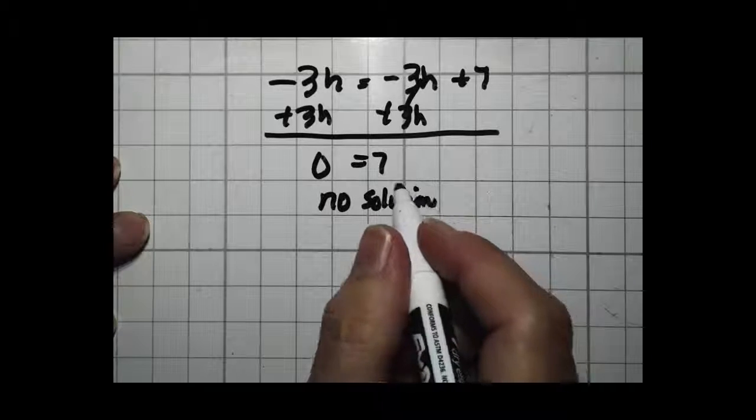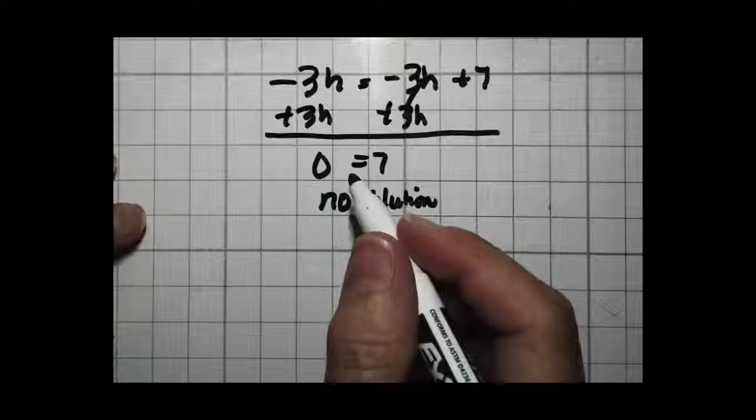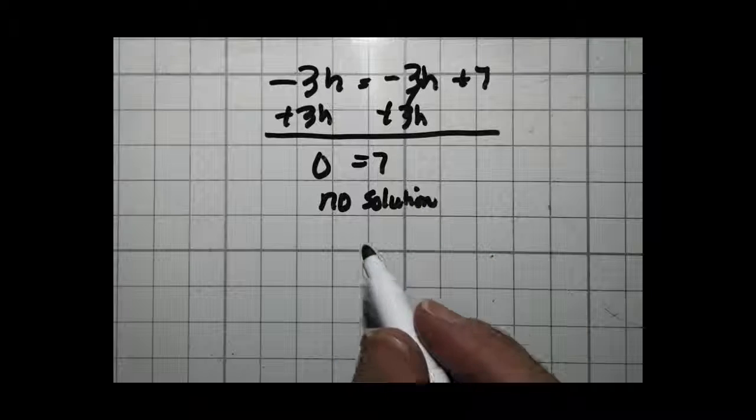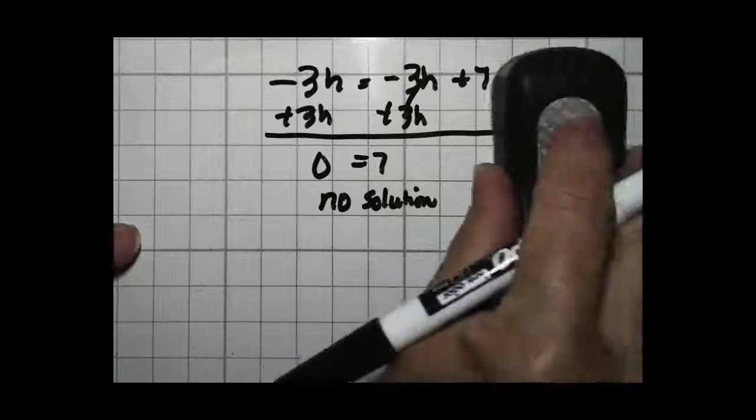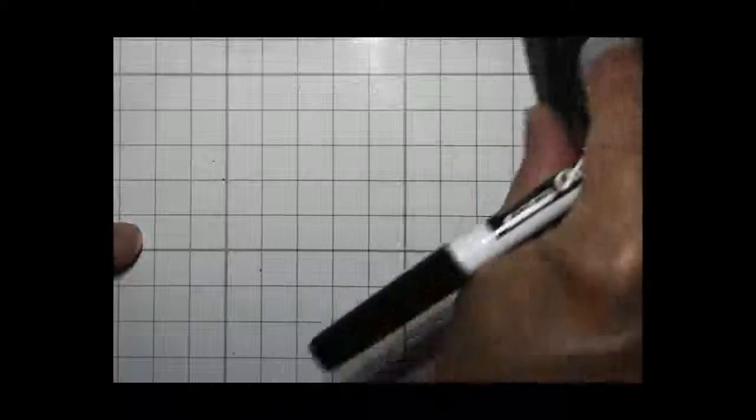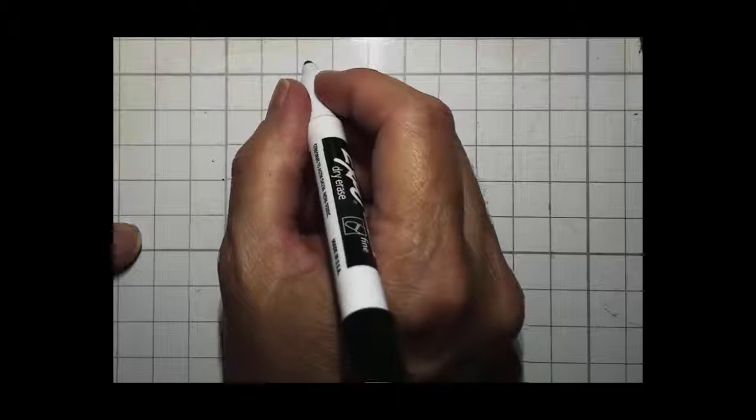Anytime you reach a point where it doesn't make sense, go back and recheck your math. If your math is right and it still doesn't make sense, then there's no solution. In other words, it's a nonsensical problem. You can't solve that. Let's do four more. We're going to do a total of five problems today.